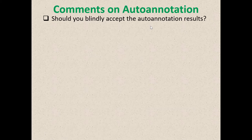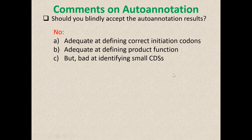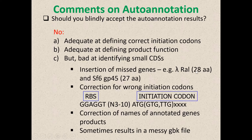Should you blindly accept auto annotation results? No. The programs are only adequate in defining the correct initiation codons and product function, and they're bad at identifying small coding sequences because they're trained for bacterial genomes, not phage genomes. Phage genomes frequently have very small coding frames. Examples include Lambda RAL, Lambda Nin, and SF6 — around 75 nucleotides. You need to correct wrong initiation codons.